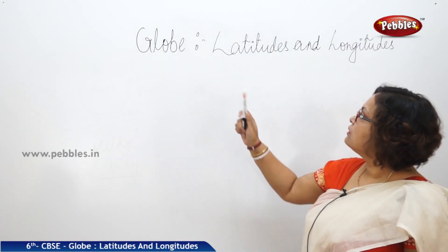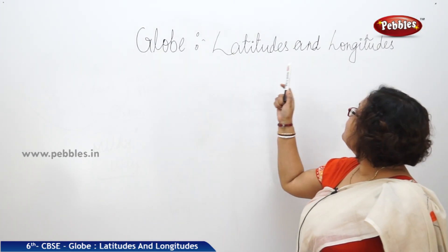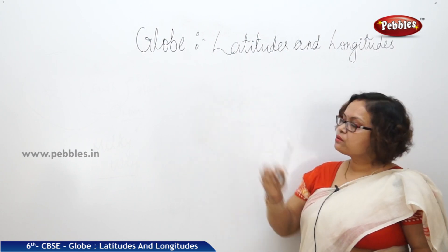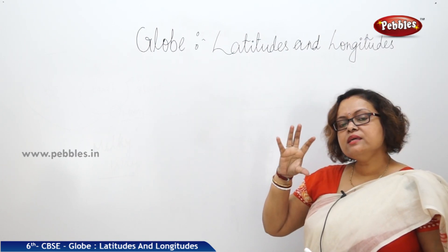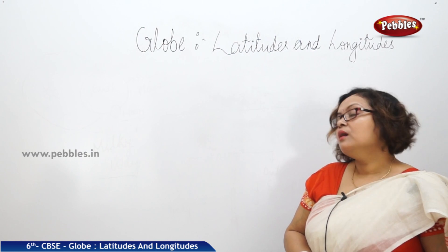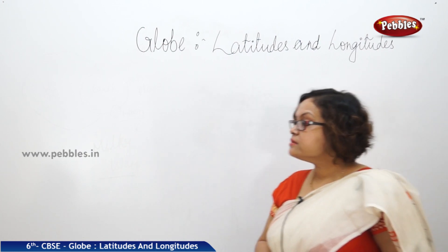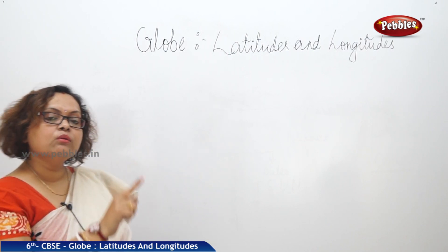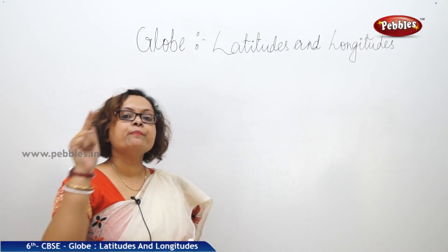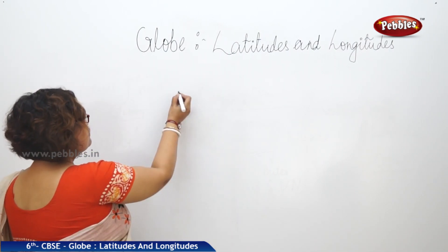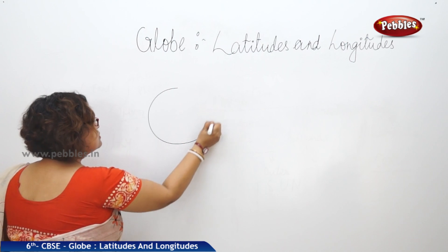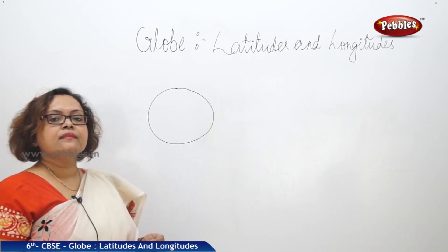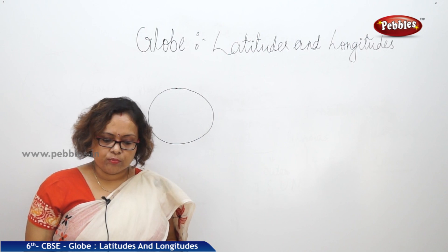Chapter 2: Globe, Latitudes and Longitudes. What is a globe? A globe is a miniature model of the Earth. You learned in your first chapter it has a particular shape and size — that shape is oblate. So this miniature model of Earth is known as a globe.